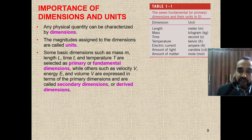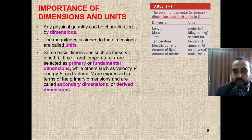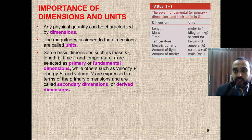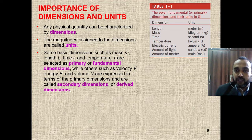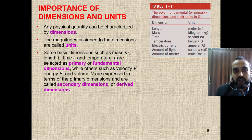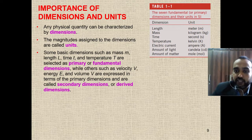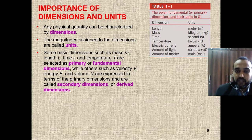Derived dimensions are combinations of primary dimensions. For example, area is length squared (m²), and volume is length cubed (m³) — both derived from length. For the systems of units, we have the SI system and the British system. For this course, we will study only the SI system.